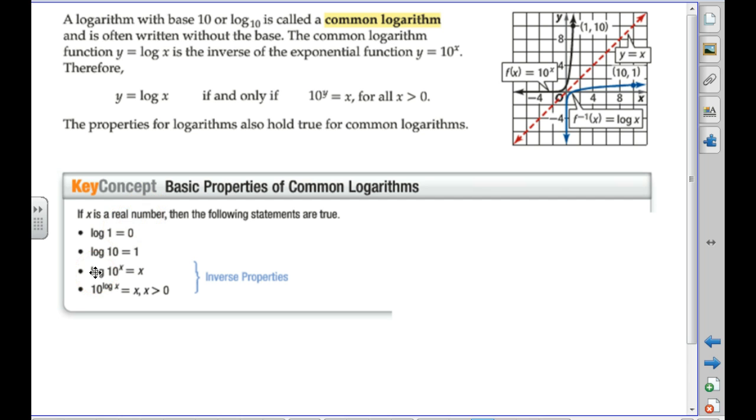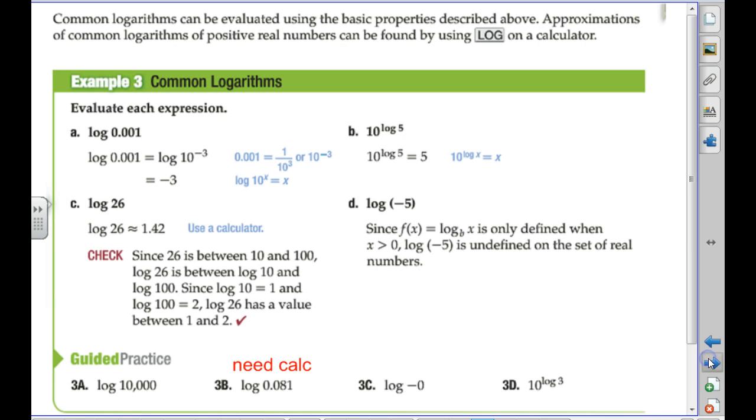All of the properties, everything we just talked about, works for what's called a common logarithm. A common logarithm is base 10, so when you see on a paper it says y equals log of 12, there's no little base down here. If it's spelled L-O-G, it means base 10. Automatically, it's always base 10. So, the graph would be, the basic graph is 10 to the x. The inverse graph would be the log, L-O-G, common log, and all the properties follow through.